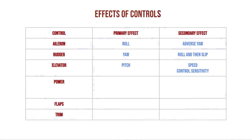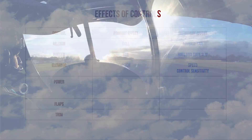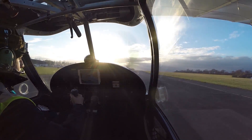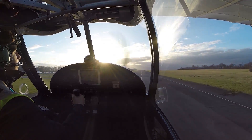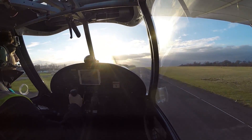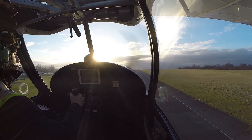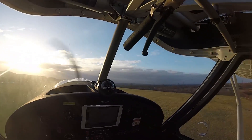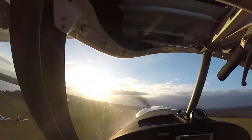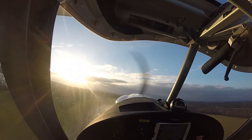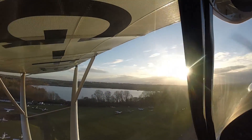In the C-42, there is another stick between your legs which controls the engine power. When you add power, the aircraft will have a temporary airspeed increase and the nose will rise, resulting in the aircraft wanting to climb. Reducing the power does the complete opposite.